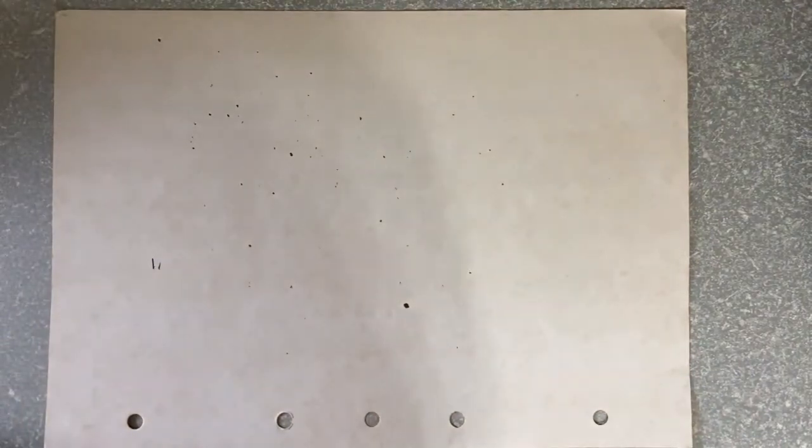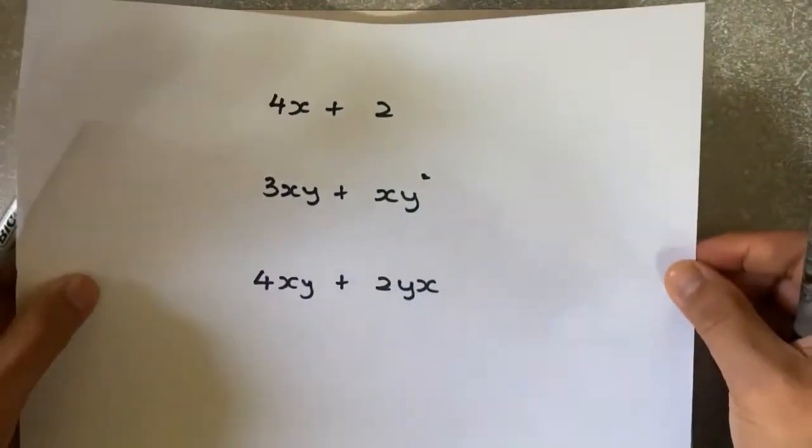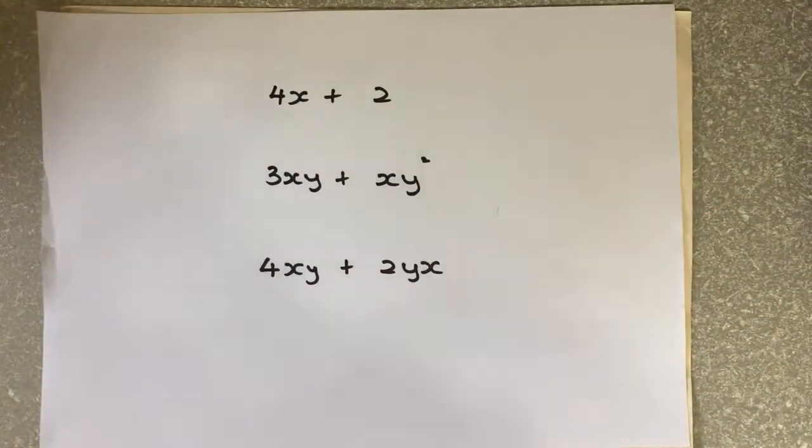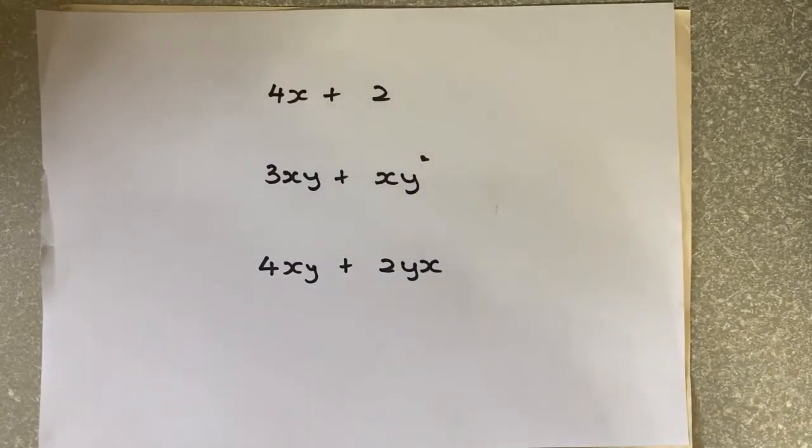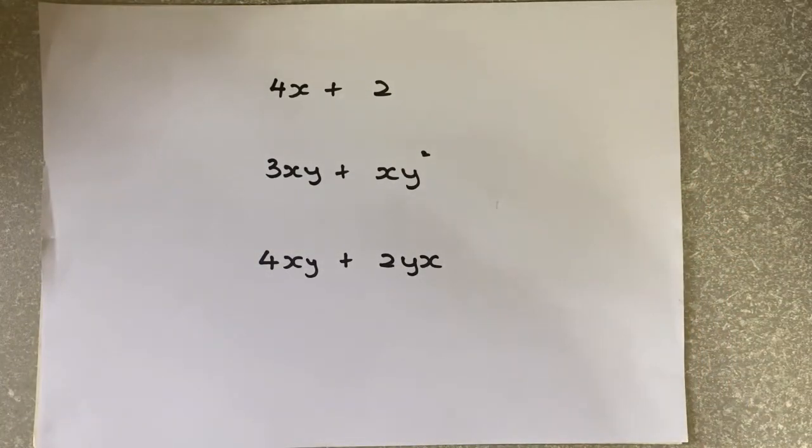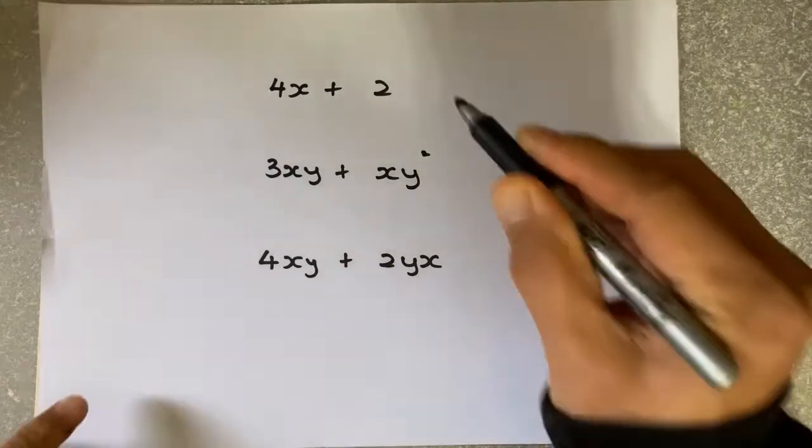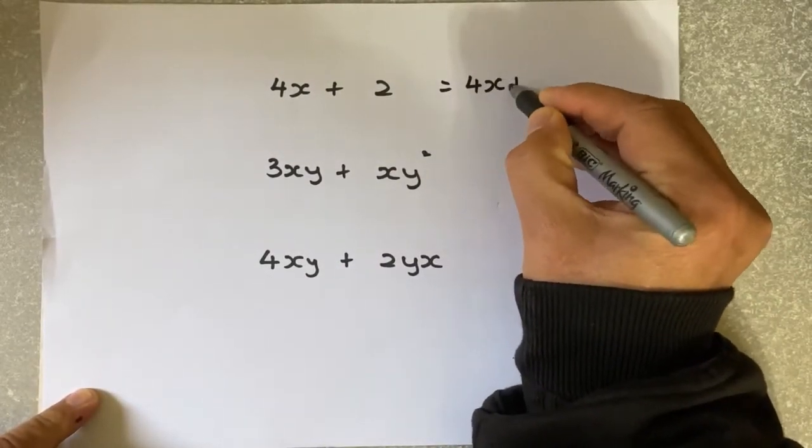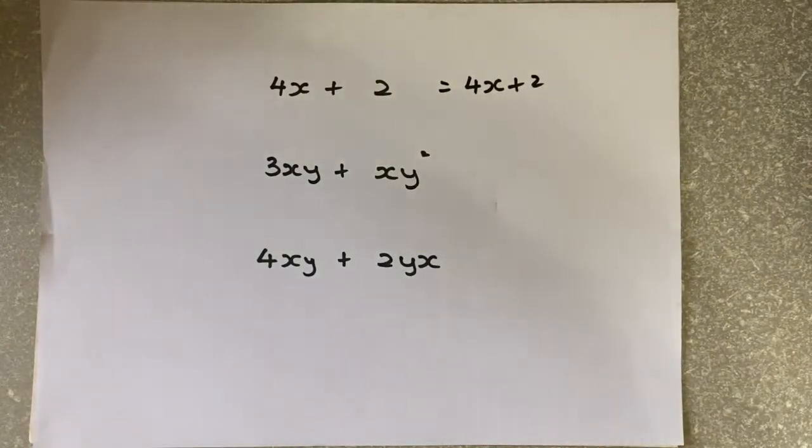Now let's look at some interesting numbers. If I have 4X plus 2, this is where a lot of people get confused. X and 2 is just a number - are they like terms? No, they are not, because X can only add with X and 2 can only add with another number. So if the exam asks you 4X plus 2, the answer remains 4X plus 2 because they're not in the same family and cannot be added up.